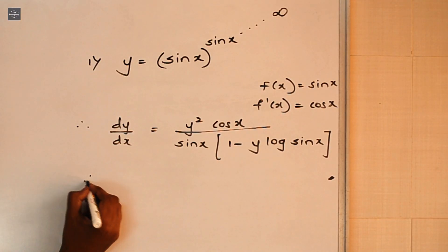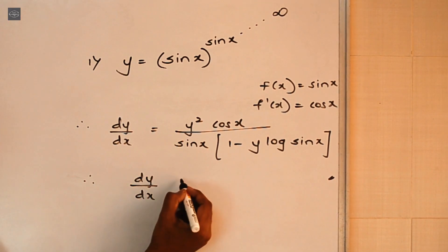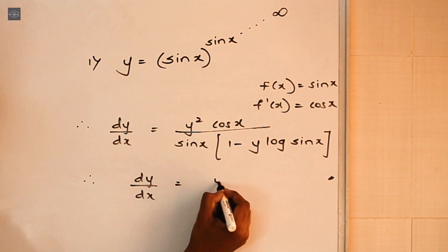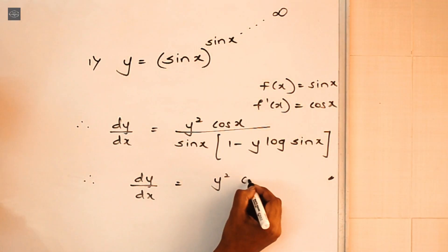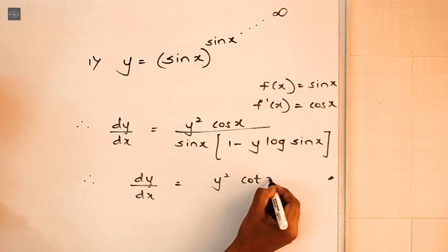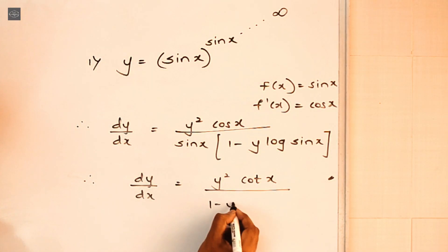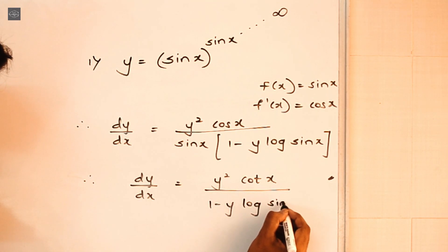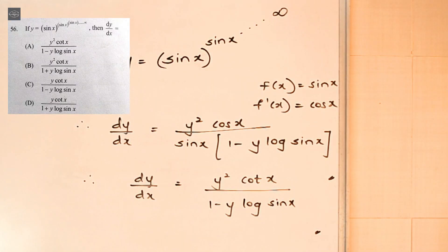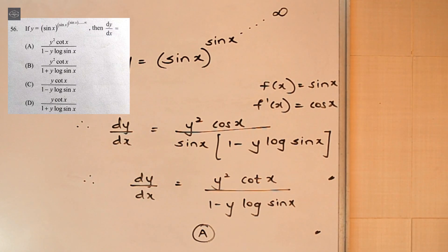Solving it further, dy/dx equals y squared times cos x over sin x — cos over sin is cot — so the answer is y²·cot x divided by (1 minus y·log sin x). And that's our final answer, which is nothing but option A, so option A is the right answer.